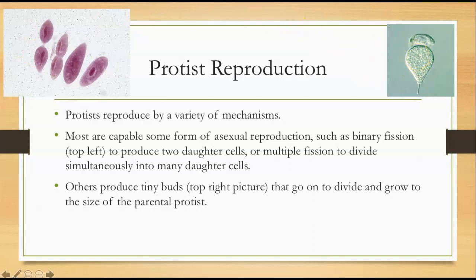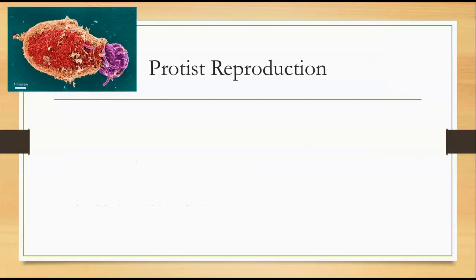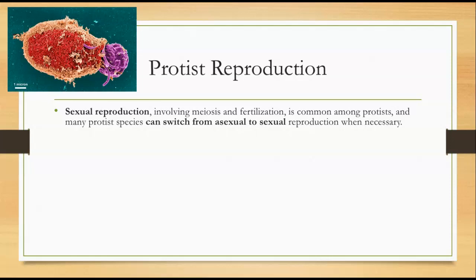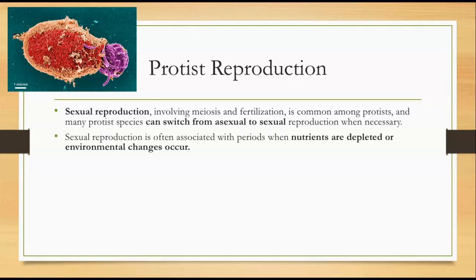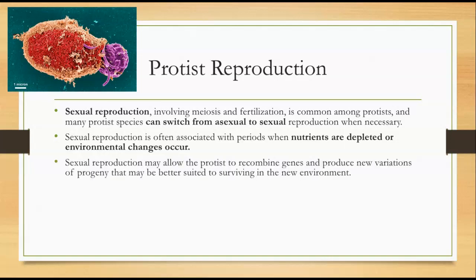So there's budding on the top right and binary fission on the top left. Sexual reproduction involving meiosis and fertilization, just like our sexual reproduction, is also common among protists. Many protist species can actually switch from asexual to sexual reproduction when necessary. Sexual reproduction is often associated with periods when nutrients are depleted or environmental changes occur — it allows protists to do genetic recombination and produce new variations of progeny that might be better suited to surviving in the new environment.